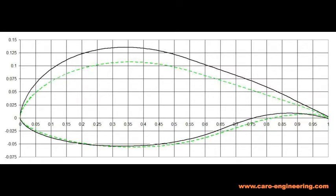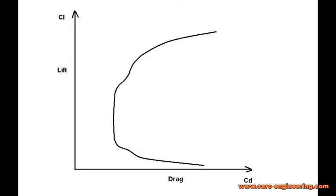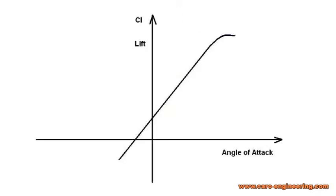So let's go step by step and look at the variables that define an airfoil. An airfoil's main purpose is to create lift with a minimum of drag, so we need a way to show how it performs and compare it with others. Engineers use drag polars with a lift coefficient on one axis and the drag coefficient on the other axis. The other important chart shows the lift curve with a lift coefficient on one axis and angle of attack on the second axis.